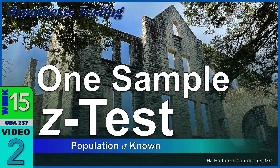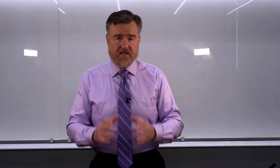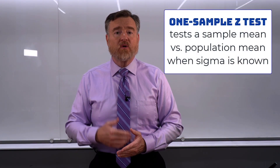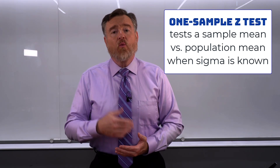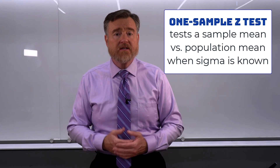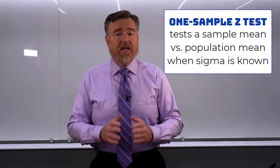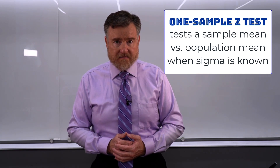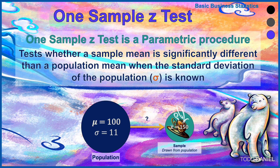We are going to begin our adventures in hypothesis testing using the most simple and basic statistical test. It's called a one-sample z-test. It's a test that we can use when the standard deviation of the population is known. A one-sample z-test is a parametric procedure, meaning that we are testing against a population parameter. It tests whether a sample mean is statistically significantly different than the population mean when the standard deviation of the population is known.